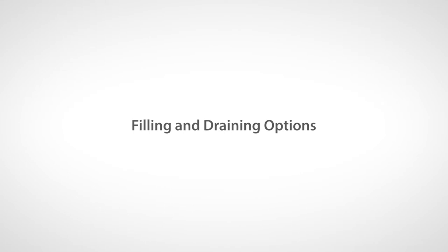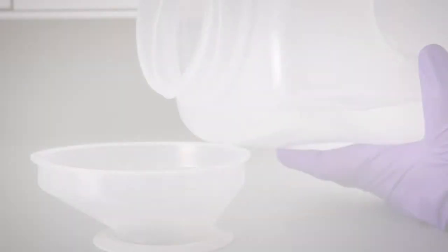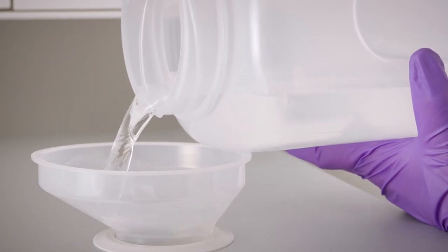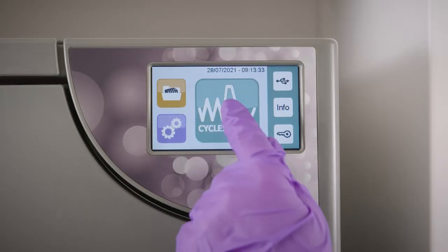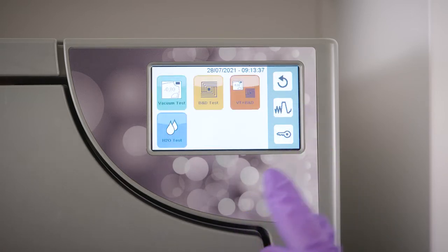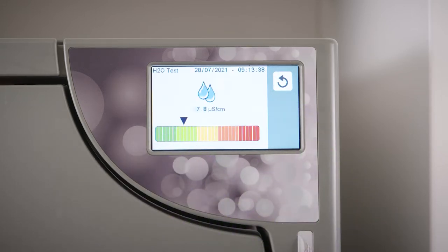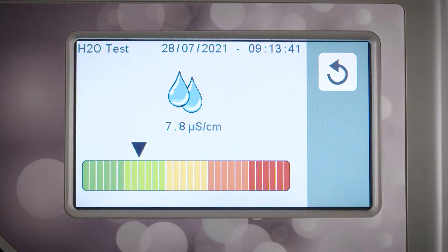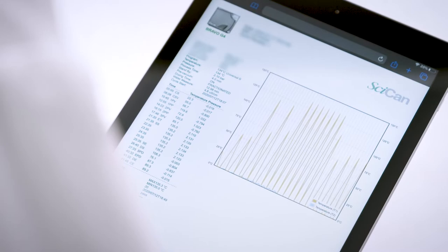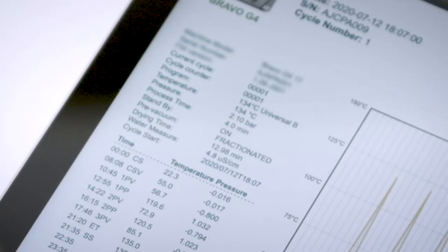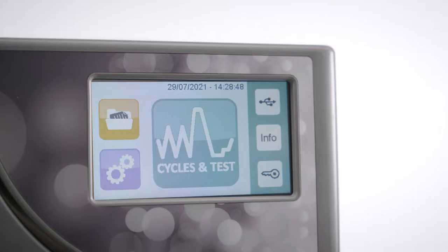The Bravo G4 requires high-quality, demineralized water. The unit's water quality sensor is designed to protect the unit and will not allow it to function with water that has a conductivity of more than 15 microsiemens per centimeter. Water conductivity is automatically measured at the start of each sterilization or test cycle. It is important to select the water filling method in the settings menu before you begin filling the unit.